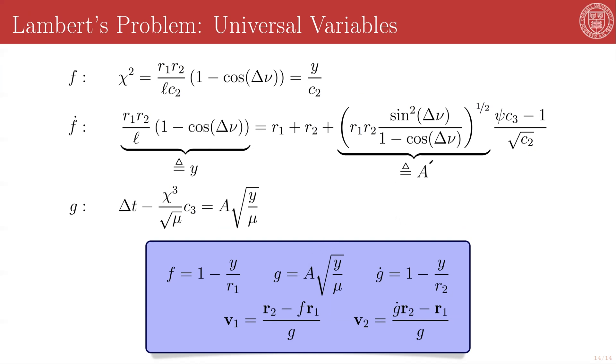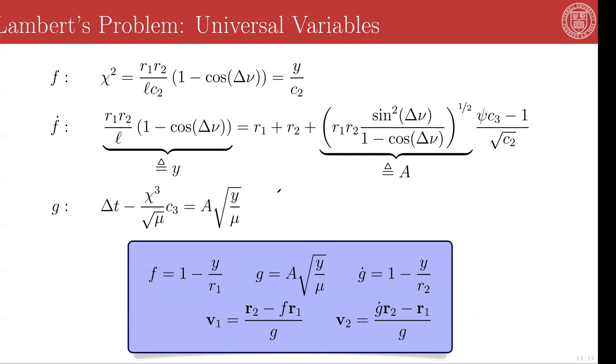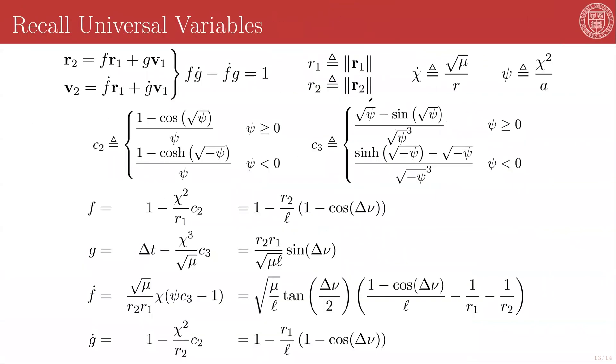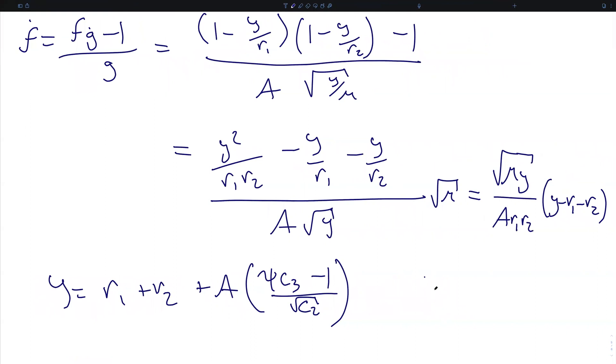A is a constant and never needs updating. This is set by the initial conditions. Y can be written as... So the only thing that's changing in y is the psi value and c3 and c2, which themselves are purely functions of psi. And similarly, chi in all of these expressions can be written as root y over c2.